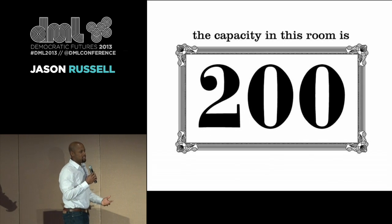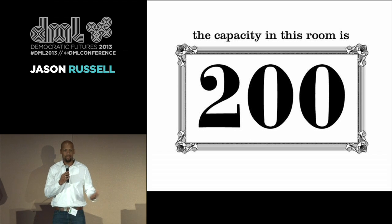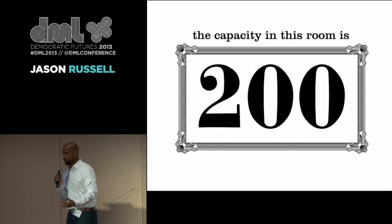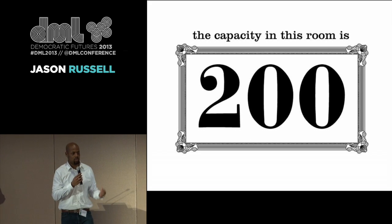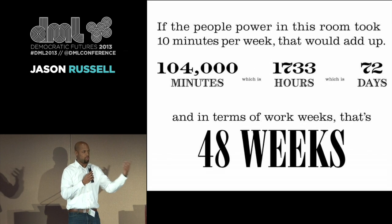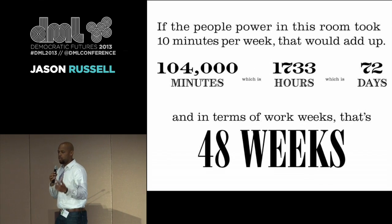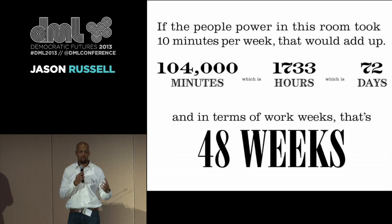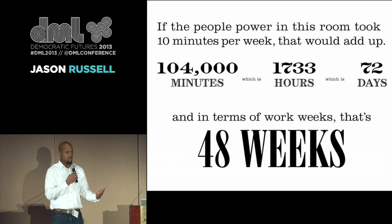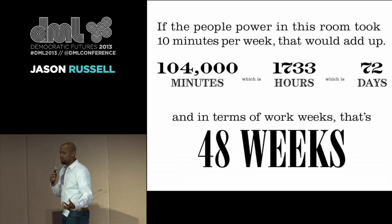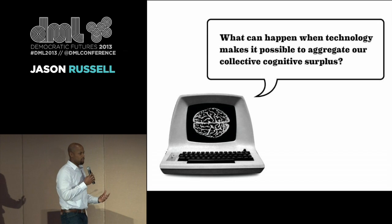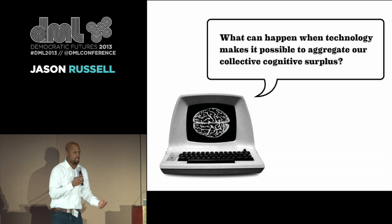What we're getting at is Clay Shirky's idea of cognitive surplus. If the capacity of this room is 200 people, what can we do to use our little extra cognitive capacity to make our communities better? If we all spent just 10 minutes a week doing something positive for our community, we could get 48 weeks of work done — a full-time worth of work. So what the Civic Commons is trying to do is answer this simple question: how do we aggregate all this cognitive surplus we have in our community, region, and nation?